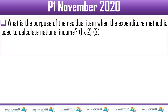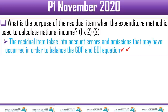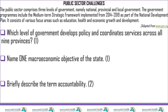Question 2.1.2 asks: what is the purpose of the residual item when the expenditure method is used to calculate GDP? The residual item is there to deal with any omissions or errors. It takes into account errors and omissions that may have occurred in order to balance the GDP and GDI equation.